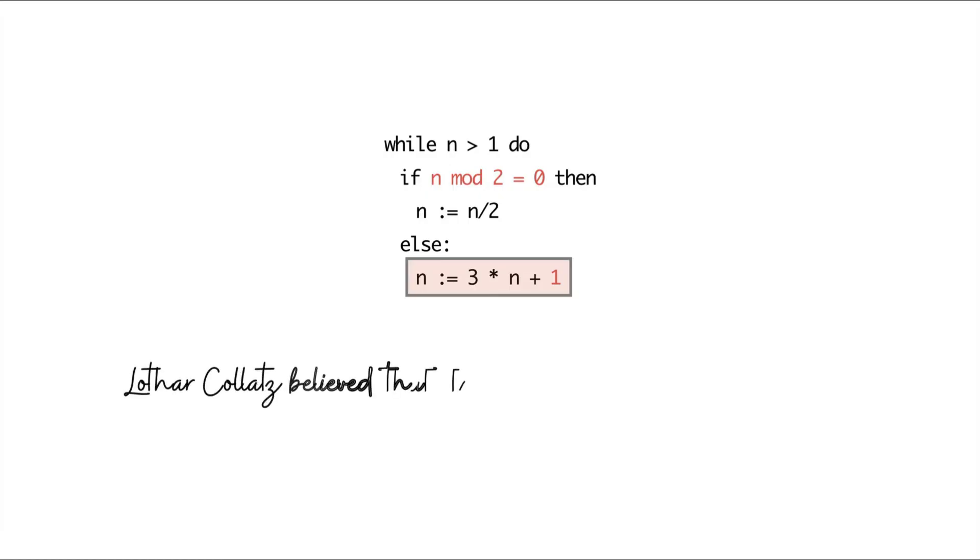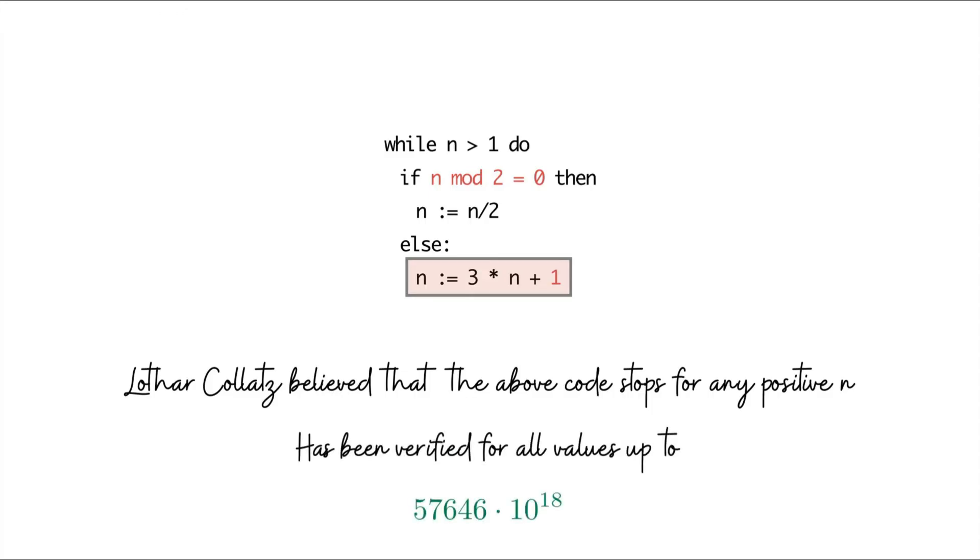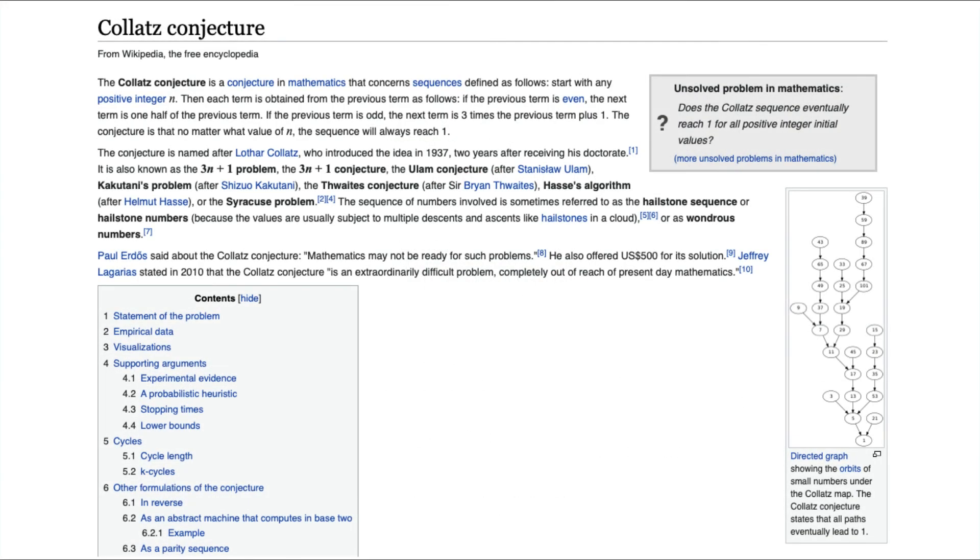But it turns out that it massively changes the nature of the problem. The mathematician Lothar Collatz believed that this code stops for any value of n. And it turns out that, as of now, nobody really knows if this is true. Of course, people have tried this computationally, apart from in other ways, and it has been verified that the program does terminate for some fairly large values of n. But we don't know if this is the case for every n or not. This is a fascinating conjecture with a lot of history. So if you are interested in this, then do look up the Collatz conjecture. I'm sure it'll be a very interesting rabbit hole for you to explore.